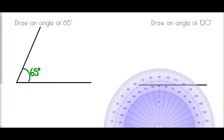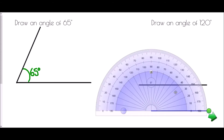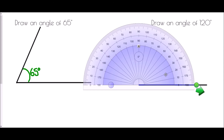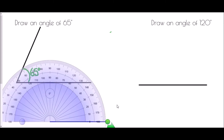Next, we're asked to draw an angle of 120 degrees. Again, I start by drawing a straight line, line up my protractor with it, then place the cross right at the very end. I use the inside numbers because that is where zero is: 10, 20, 30, around to 90, 100, 110, 120 — marked right here. I take away my protractor, draw through the point marked, and label the inside of that angle as 120 degrees.